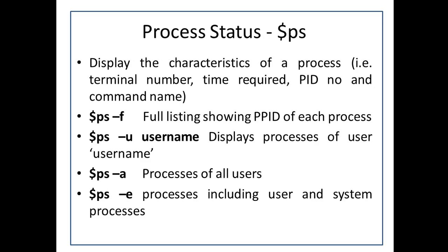The PS command is also called the Process Status command. It displays the characteristics of the process: the terminal number, time required for execution, PID (Process Identification Number), and the command name. There are various options available for the PS command that we can check from the man command.